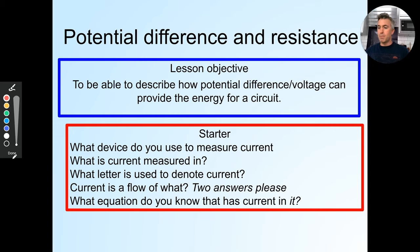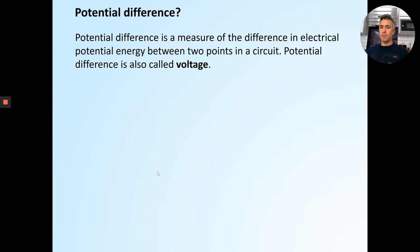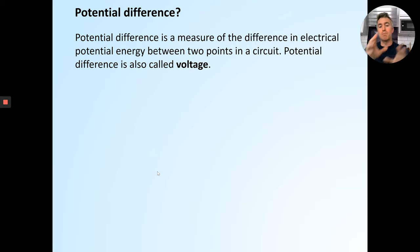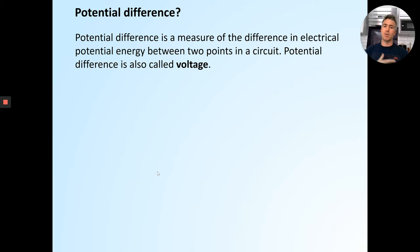Potential difference is a measure of the difference in electrical potential energy between two points in a circuit. Potential difference is also called voltage. People normally talk about 'what's the voltage,' but the correct term in the circuit would be to talk about the potential difference. It's measured in volts. It's like asking about temperature — you say 'what's the temperature?' not 'what's the degrees?'. So the correct term is 'what's the potential difference?' and the answer might be 'it's 12 volts.'